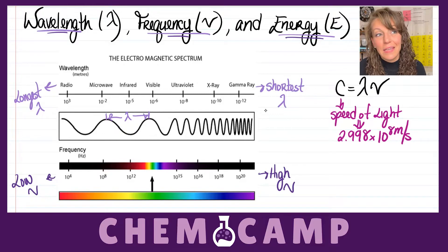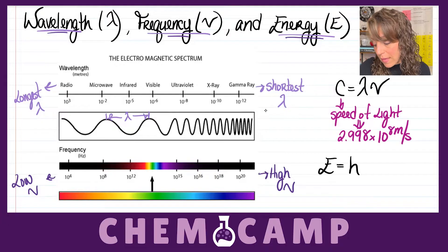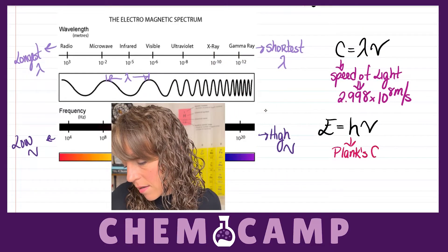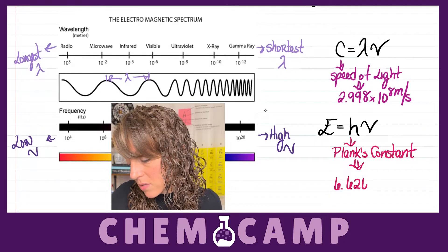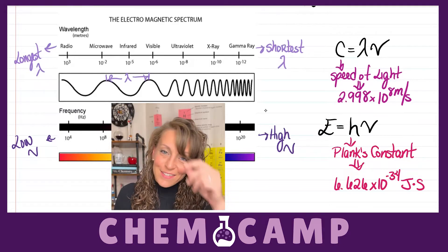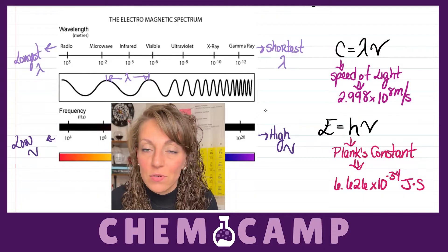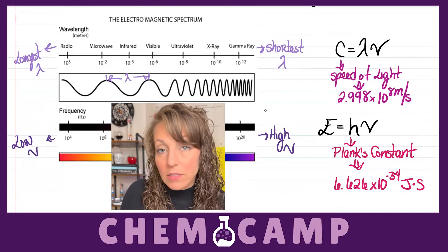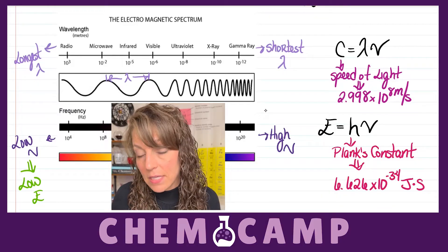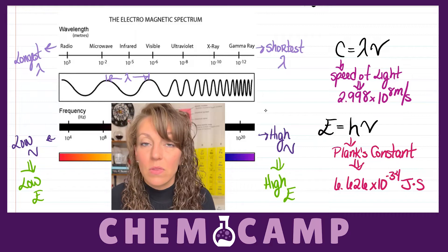Not only this, but we can actually relate a frequency to energy using a second equation, where E, energy, is going to equal your Planck's constant h times nu, your frequency. Planck's constant h equals 6.626 times 10 to the negative 34 joules per second. Now here, since E and nu the frequency are on opposite sides of the equation, your energy is actually directly proportional to your frequency. So a low frequency corresponds to a lower energy, and vice versa — the higher the frequency, the higher the energy associated with that particular type of radiation.